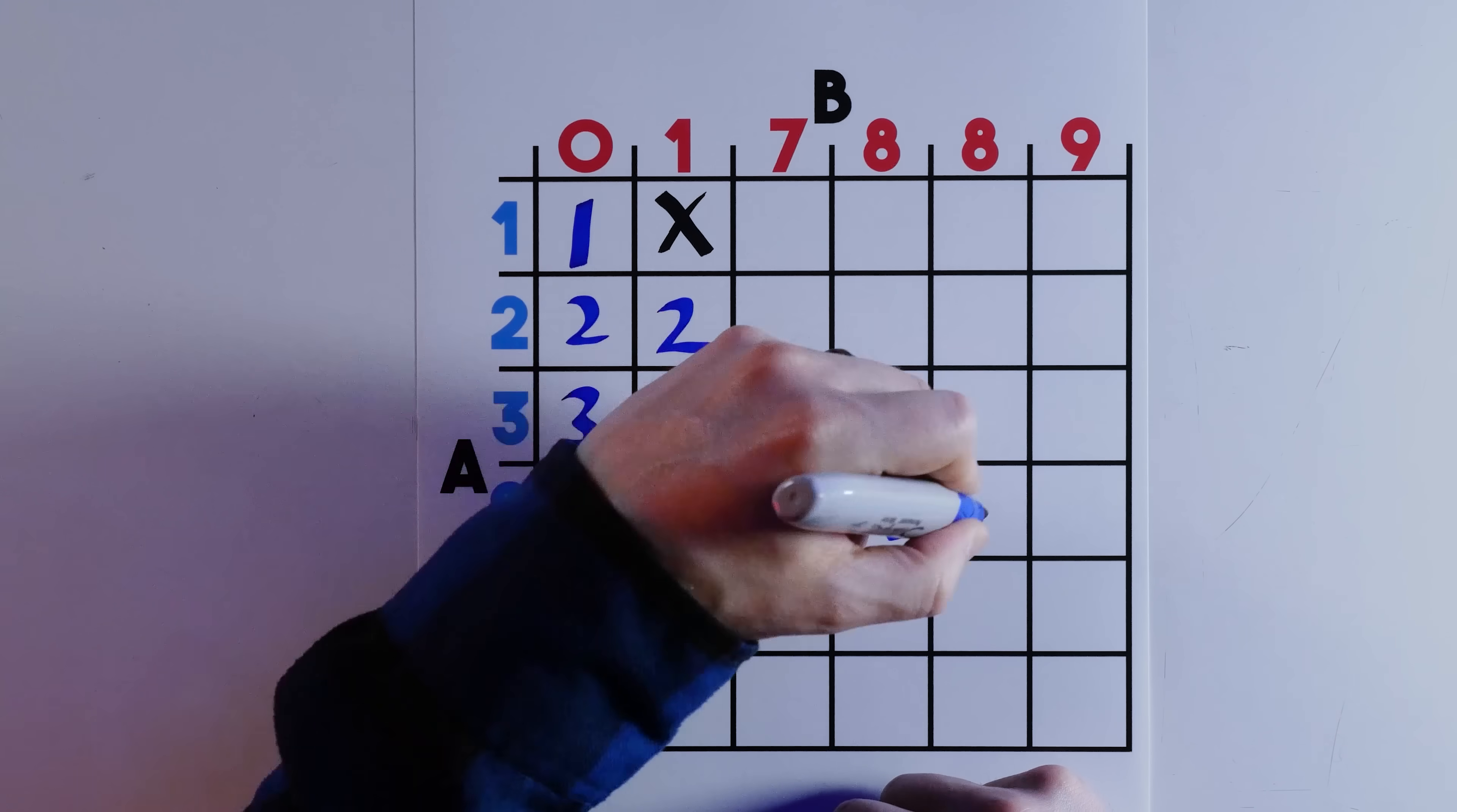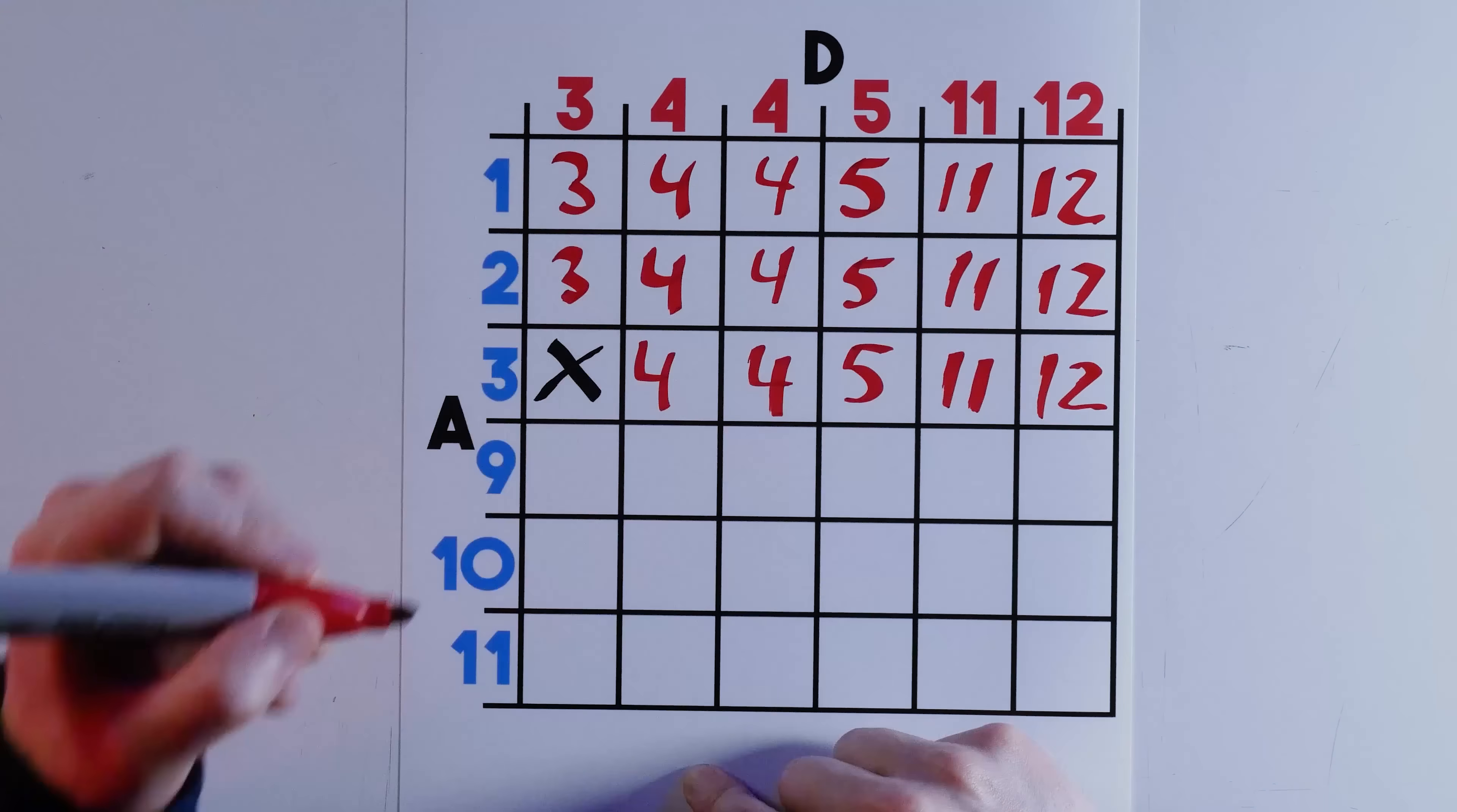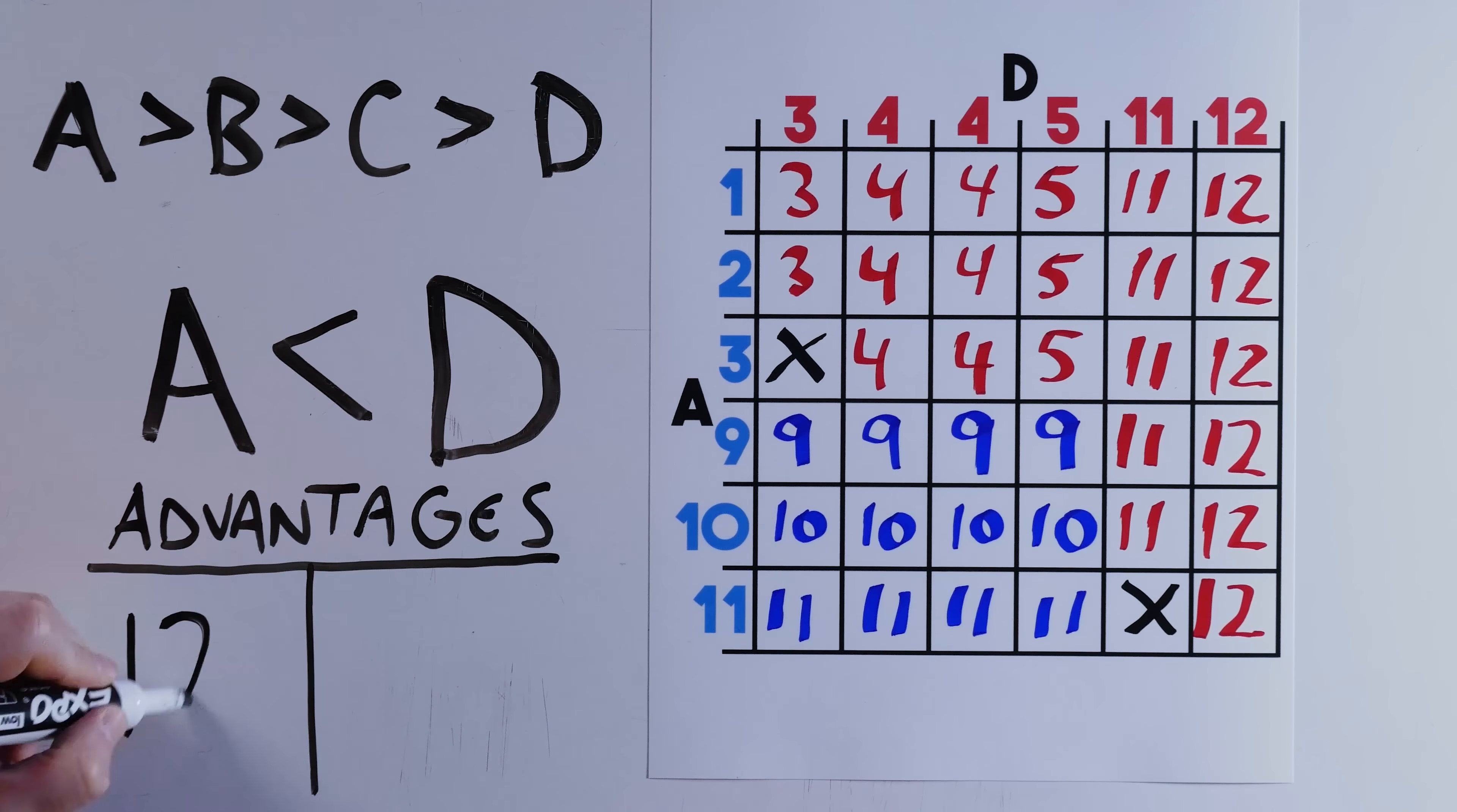These charts reveal the truth about the matchups in our 0 through 12 dice, and I've labeled the squares that each die wins. Just like I said, A beats B around two-thirds of the time, and it's the same for B vs. C and C vs. D. But let's look at D vs. A. Despite being worse against C, which is worse than B, which is worse than A, D is actually stronger than A. Which makes no sense. It makes no sense, but it's mathematically true.